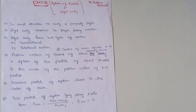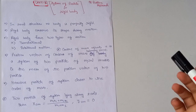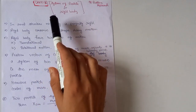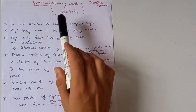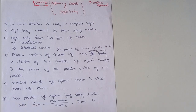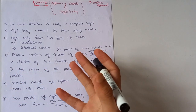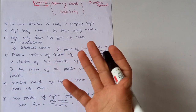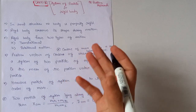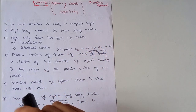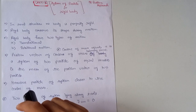Hello friends, welcome back to Positive Approach. This is Nitesh Bhardwaj. Today we will discuss unit number 5, whose name is System of Particles and Rigid Body. First we will discuss some important key points of this chapter, and after that we will do numericals on the basis of some formulas. So without wasting any time, let's start.